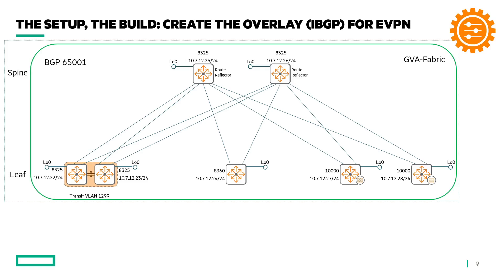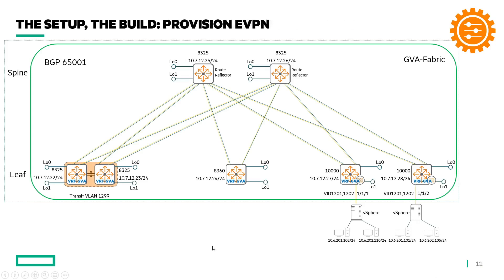Next we'll create the overlay based on iBGP, which is also used for EVPN. So: underlay, then overlay. Once we have that configured, we'll use a specific VRF for the EVPN VXLAN. You can have multiple VRFs assigned to VXLAN instances, but in this scenario we'll be creating one VRF that we'll use for EVPN VXLAN.